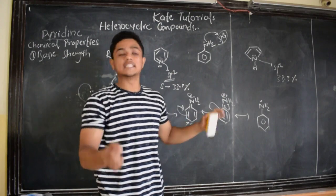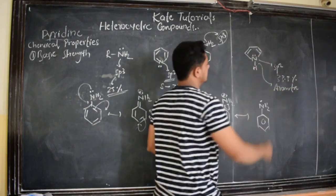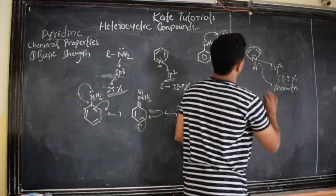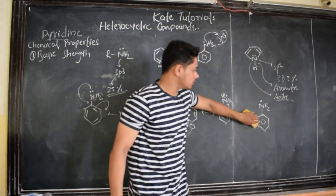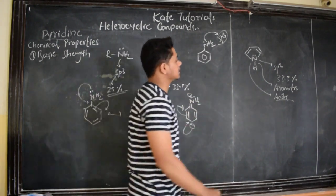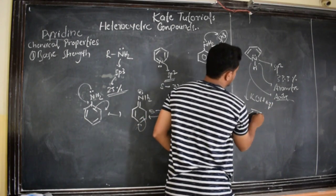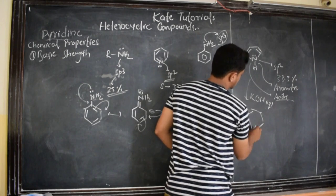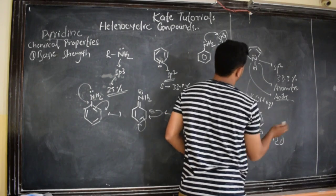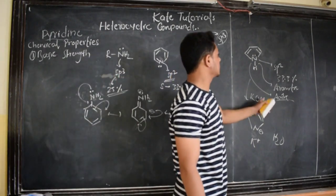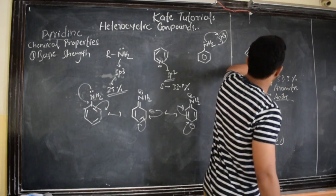Pyrrole will be a little acidic in nature, not basic. Because the lone pair of electrons is involved in aromaticity — to get that aromaticity, it has donated its lone pair. If I treat pyrrole with aqueous KOH, which is a strong base, we will get a salt. The N-H loses H⁺ and K⁺ attacks, giving salt and water. This is an acid-base reaction — pyrrole acts as an acid. So it will not be basic at all; it will actually be a little acidic in nature.